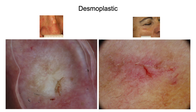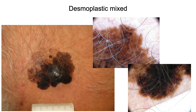Upon dermoscopy, pure desmoplastic melanomas display a scar-like appearance with a homogeneous pinkish background with white structures and atypical vessels. Mixed forms also exist, accounting for almost 50% of cases. These are associated with a junctional lentigo-maligna-like in situ component, which can be easily recognized upon dermoscopy, usually hiding the deeper desmoplastic component.